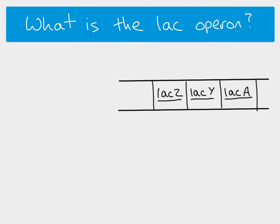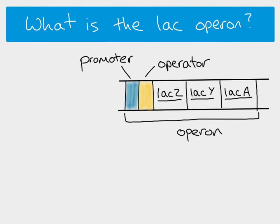We also have something called an operator, which is basically the switch — this is how the genes can be turned on so they are expressed, or turned off so they're not expressed. Then we have something called the promoter. The promoter, the operator, and all of these structural genes are all part of this thing called the operon. Because these genes involve lactose, we call it the lac operon. It's basically a group of structural genes linked together so they can all be transcribed at once — one switch controls transcription for all of the genes.